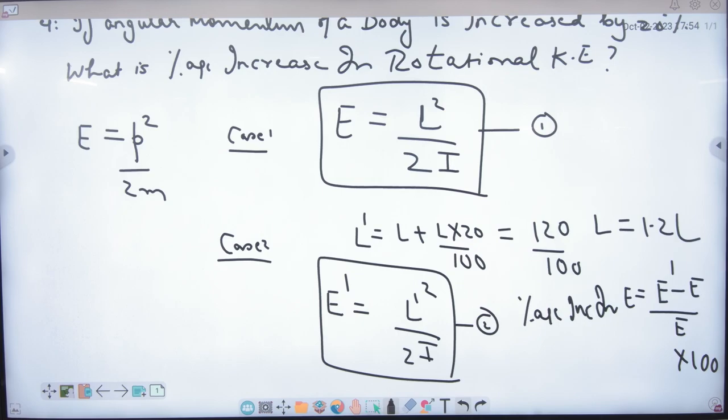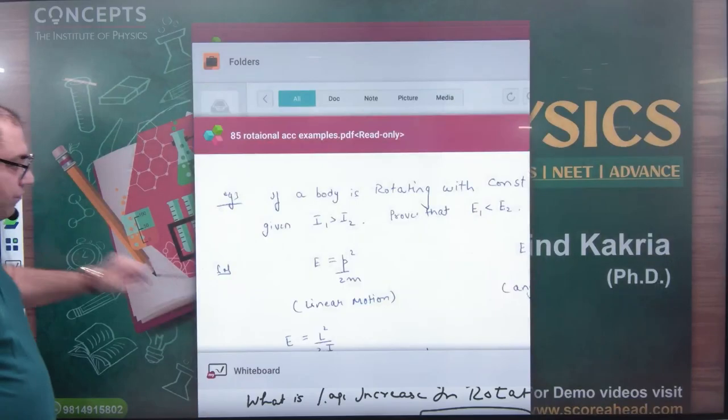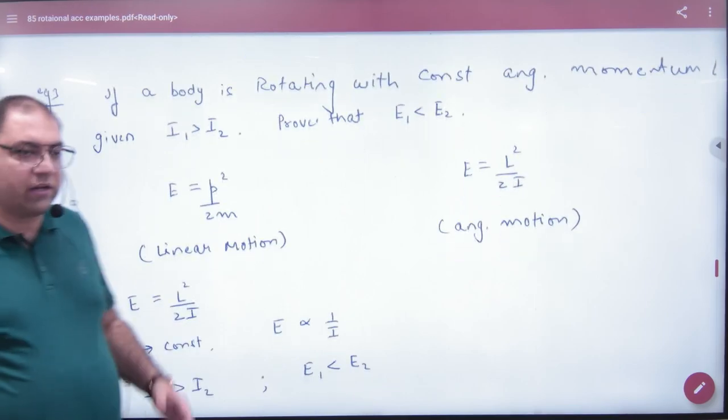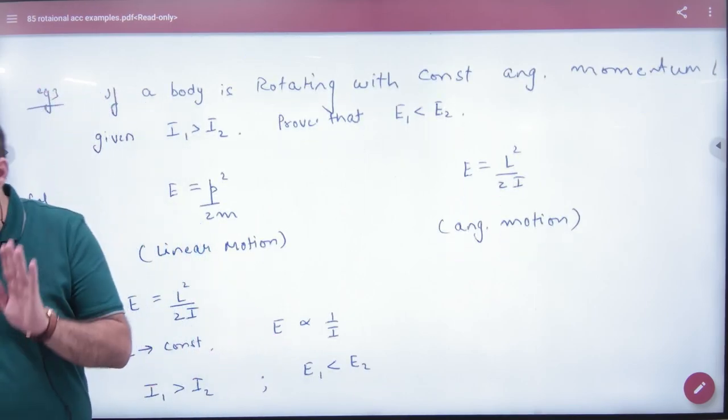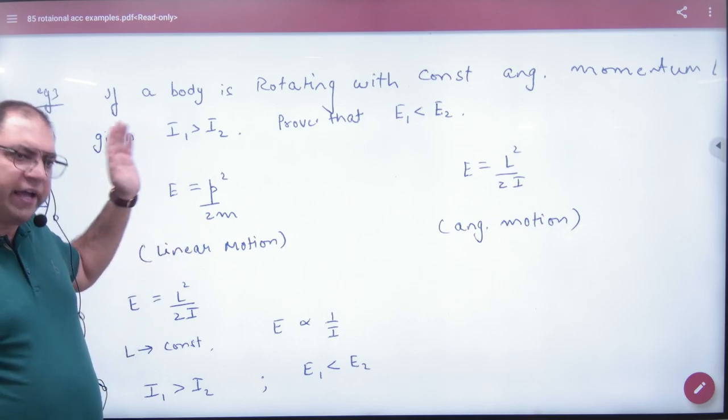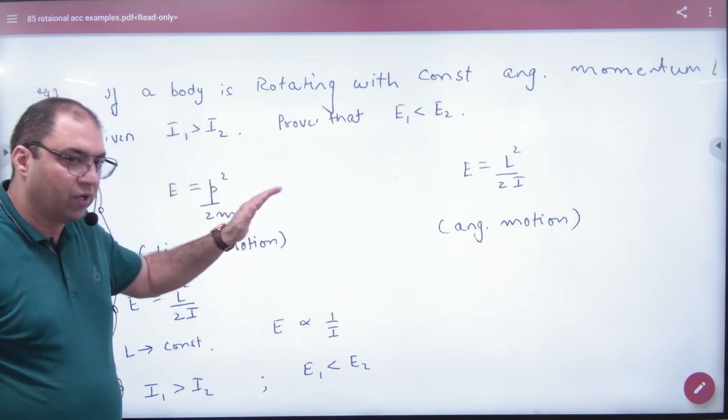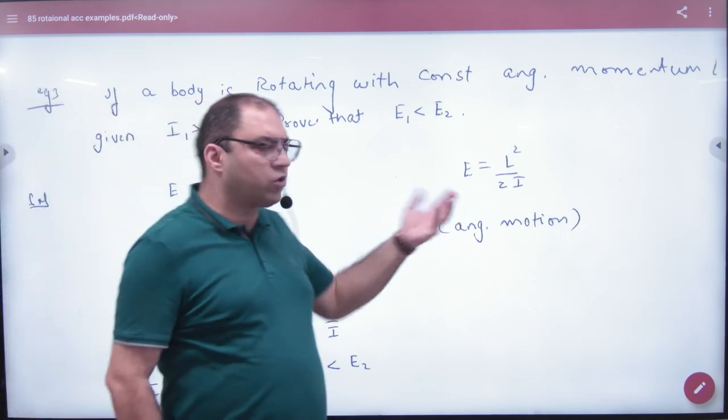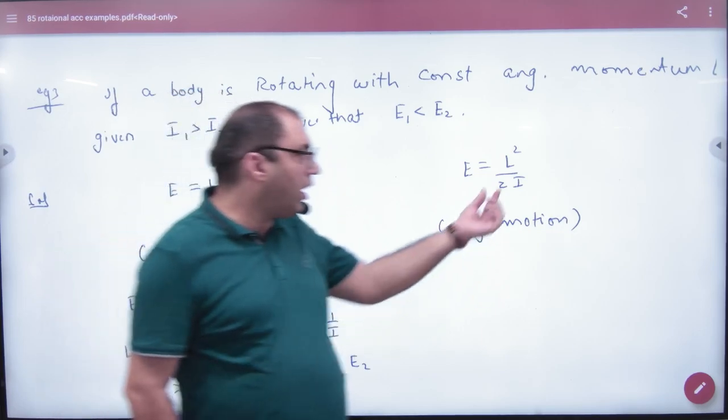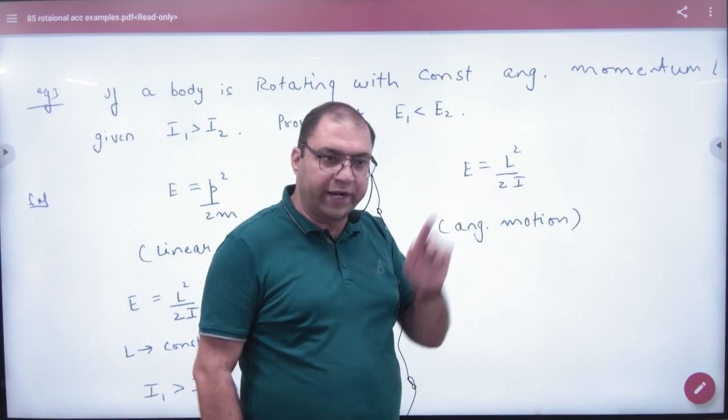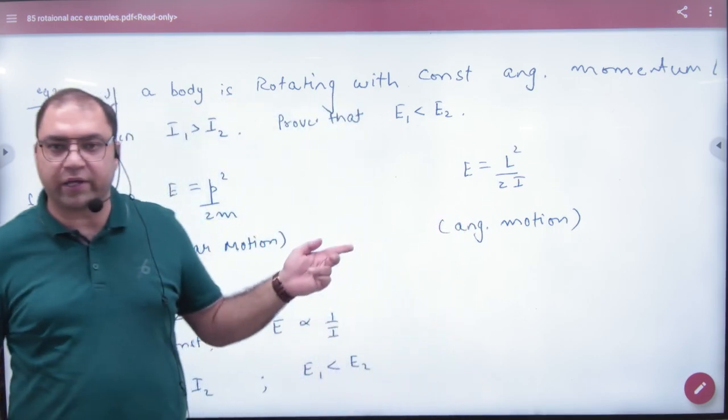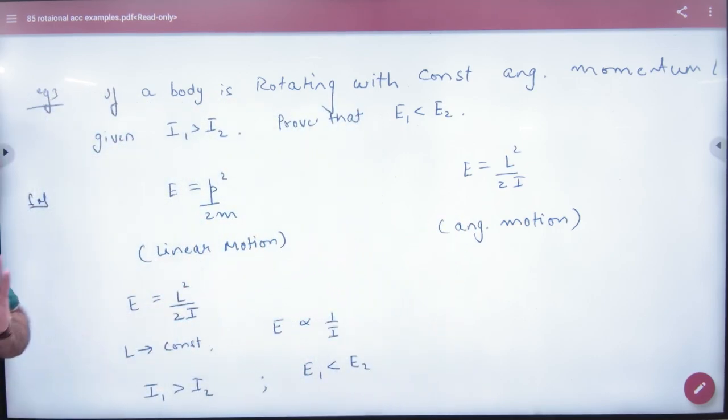Next, in this question, if a body is rotating with constant angular momentum, L constant, if that body's moment of inertia becomes bigger, I2, then E2 will be smaller, because E is inversely proportional to moment of inertia.